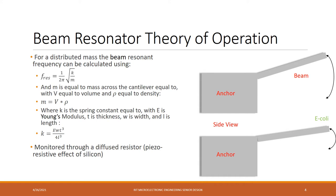The image on the top shows the oscillation of the cantilever as it vibrates. The image on the bottom shows the same cantilever with the same dimensions vibrating or oscillating at a lower frequency due to the additional mass in the form of E. coli.